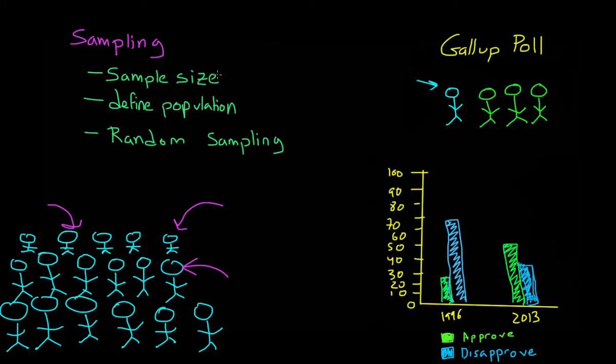Not having enough participants and not paying attention to our population and not trying to sample randomly from that population might lead to sampling bias.